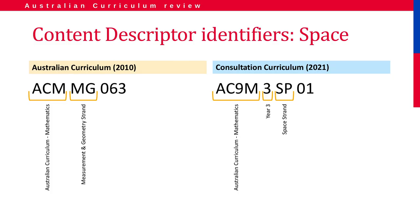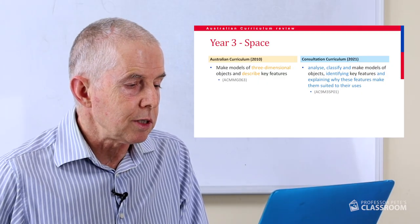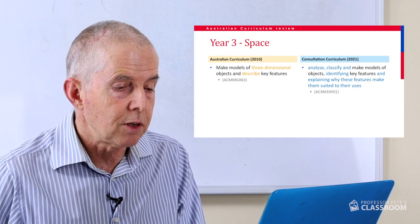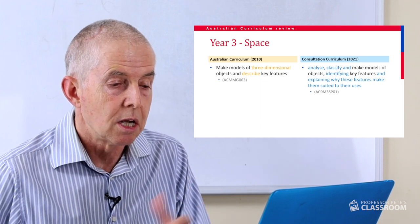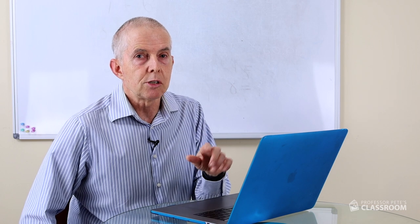Now we're moving on to space. We didn't have it as a strand called space — it was part of measurement and geometry with an MG code, now changed to SP. The first content descriptor used to say make models of three-dimensional objects and describe key features. The new one has expanded language: analyze, classify and make models of objects, identifying key features and explaining why these features make them suited to their uses. The only thing I have a slight niggle about is taking out the phrase 'three-dimensional' — they've done that throughout the curriculum, reducing all mentions of two-dimensional shapes to just 'shapes' and three-dimensional objects to just 'objects'. I think that's a mistake.